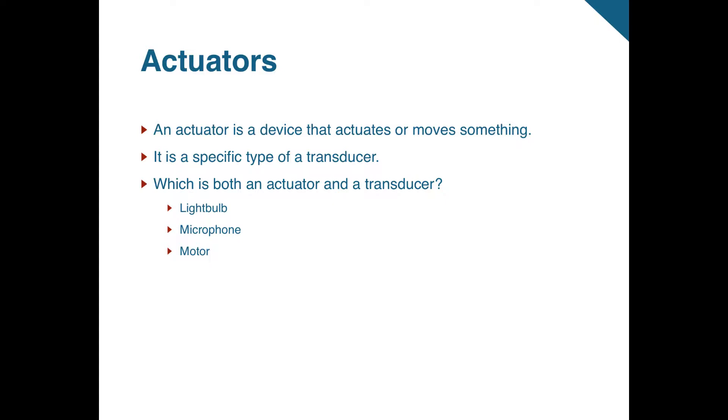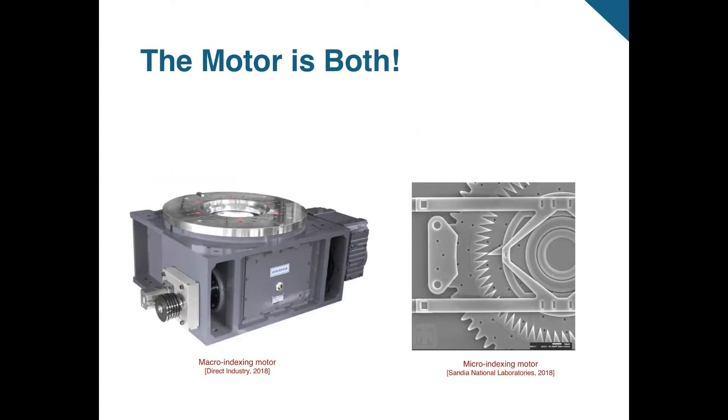Which of the transducers from the previous slide is an actuator as well? The light bulb, the microphone, or the motor? The answer would be the motor. Because the motor converts electrical energy into movement or motion. The output motion of the motor can be used to turn gears, raise levers, and move pistons up and down. Therefore, a motor is both a transducer, since it converts electrical energy to mechanical energy, and an actuator, because it moves something.